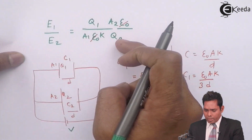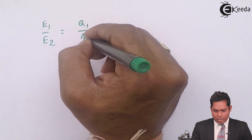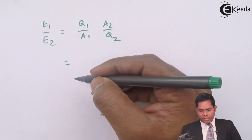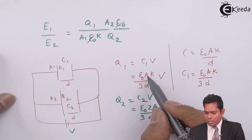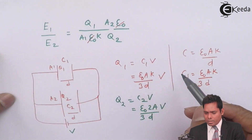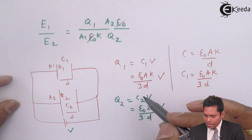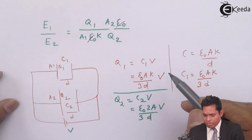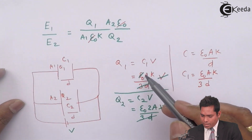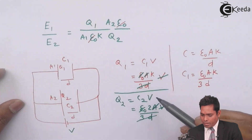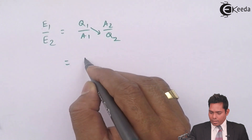Substituting: E1/E2 = (Q1/A1) × (A2/Q2) = (Q1/Q2) × (A2/A1). We found Q1/Q2 = K/2. Now A2/A1 = (2A/3)/(A/3) = 2. So E1/E2 = (K/2) × (1/K) × 2... let me recompute: E1/E2 = (Q1/Q2) × (A2/A1) × (1/K) = (K/2) × 2 × (1/K) = 1. So E1/E2 = 1, confirming the first option is correct.